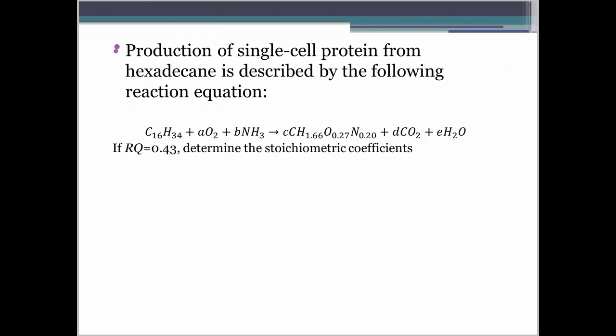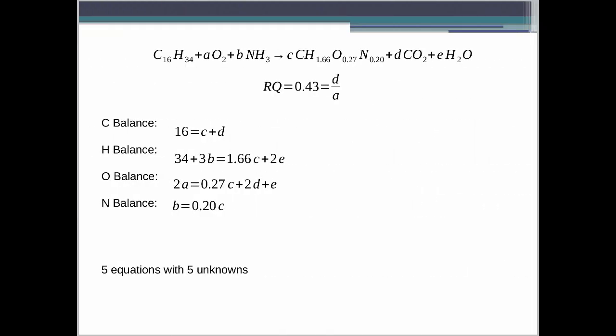Let's have an example. In the production of single cell protein from hexadecane C₁₆, this is an aerobic reaction with oxygen. The nitrogen source is ammonia. You have your biomass — this is the simplified chemical formula of the biomass — and then carbon dioxide and water. If the respiratory quotient RQ is 0.43, what are the stoichiometric coefficients? We are looking for A, B, C, D, and E. Given the stoichiometric reaction equation and RQ = 0.43, which equals D over A.